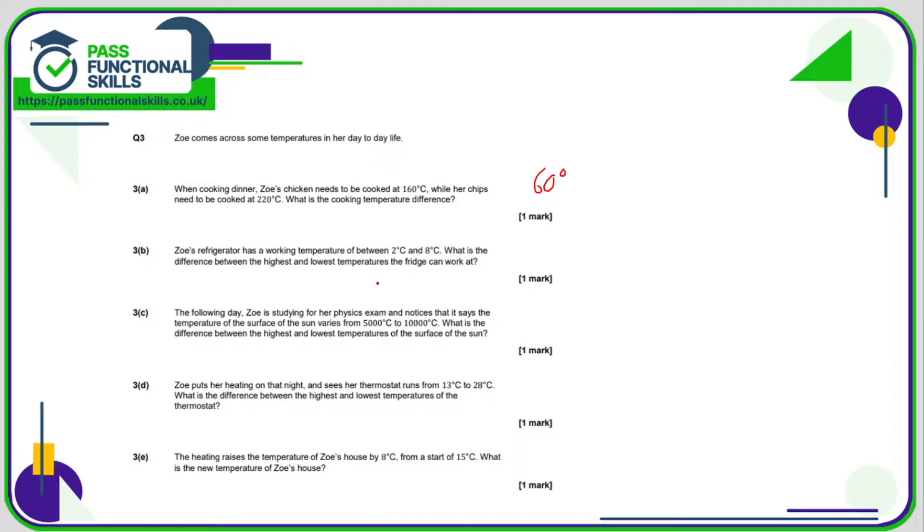In part B, what is the difference between 2 and 8? 8 minus 2 is 6, and that's a difference of 6 degrees. Here we are working at the difference between 5000 and 10000. 10000 minus 5000, that's a difference of 5000 degrees. Question D: the difference between the highest is 28 and the lowest 13. 28 take away 13 is 15 degrees. On this final question, if she raises the temperature from 15 by 8 degrees, 15 plus 8 is 23 degrees.